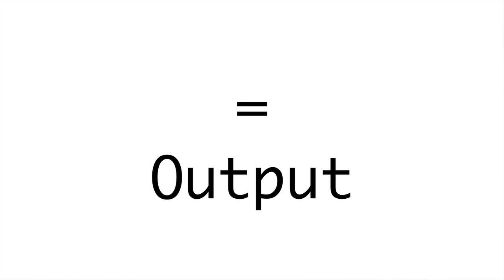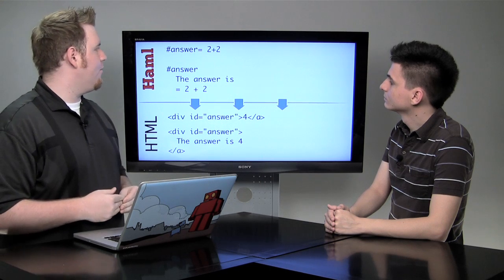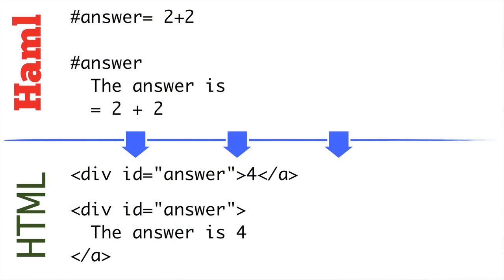In our templates, we often want dynamic code output. When we end our tag with an equal sign or begin our line with an equal sign, it means the rest of our line will be interpreted as native code and its results will be output into the HTML. So in this example, we're creating a div with the ID answer and trailing it with an equal sign — everything after the equal sign will be interpreted by its native language, in our case Ruby. So we're evaluating 2 plus 2, and the generated content will be 4. We can also lead our line with an equal sign to insert dynamic code in place.